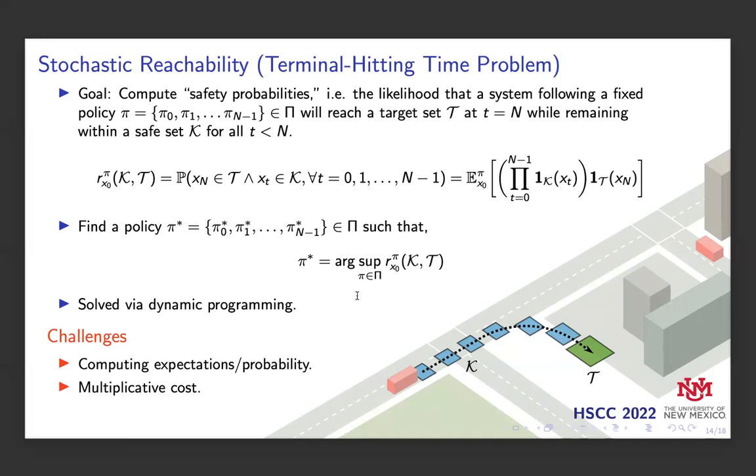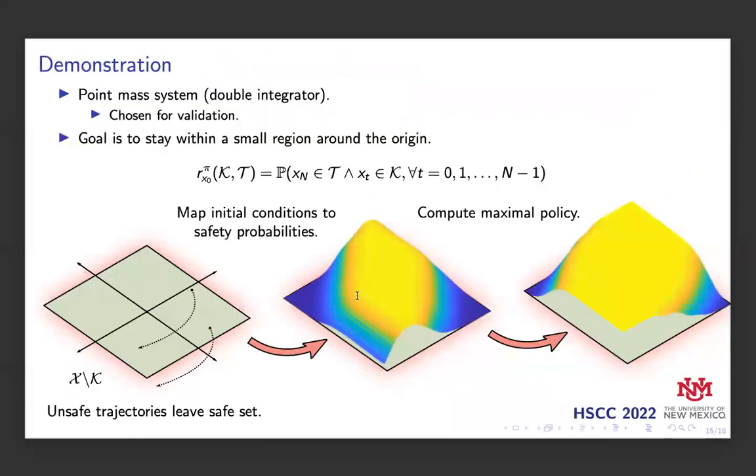Using our approach we solve an approximate reformulation of the problem using kernel embeddings. Here we have a small demonstration of this on a stochastic chain of integrator system that we chose for validation. The goal here is to remain within a small region around the origin, and the trajectories that leave the safe set due to the dynamics will have a lower safety probability than those that stay within the set. Using data, our toolbox is able to compute these safety probabilities without a model of the system. We can use our algorithm to compute a maximally safe policy that has a higher likelihood of safety because it maximizes the safety probabilities at each time step. The warmer colors here indicate higher probabilities.